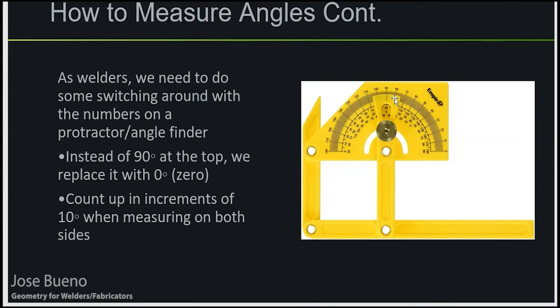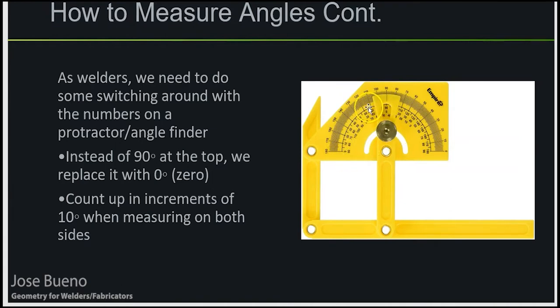So instead of 90, it's going to be 0 degrees up at the top, and we count in one direction in increments of 10, and then the same thing with the other side. Instead of 90 at the top counting down — 90, 80, 70, 60, 50, 40, 30, 20, 0 — it's going to be 0 right here, and then 10, 20, 30, 40, 50, 60, 70, and so on. Then the same thing on the other side.